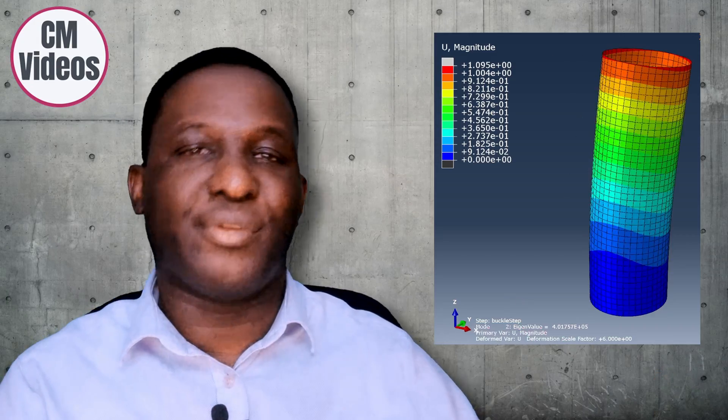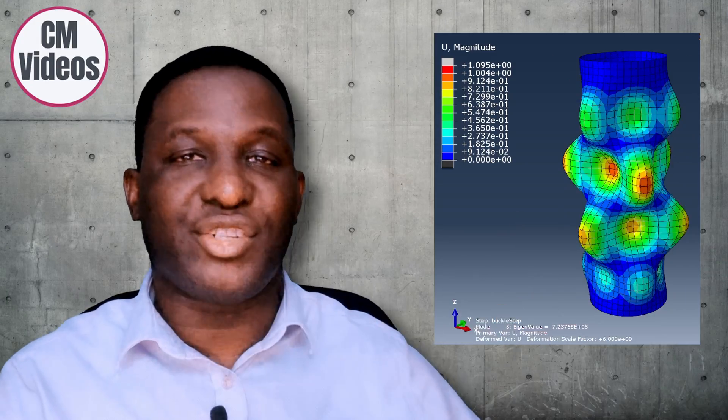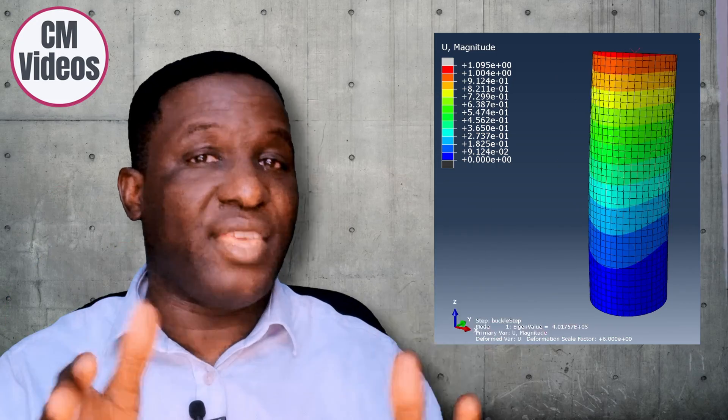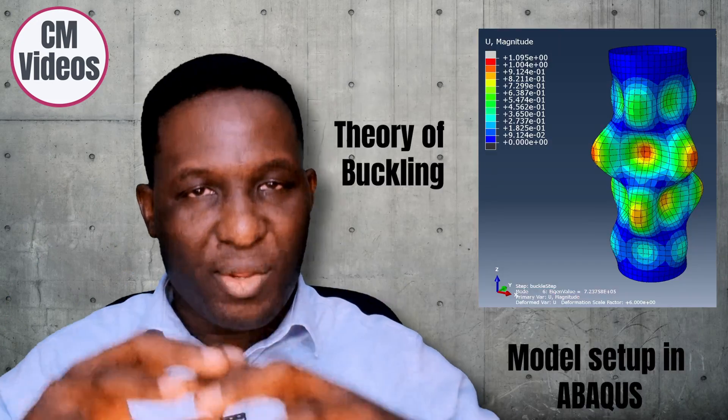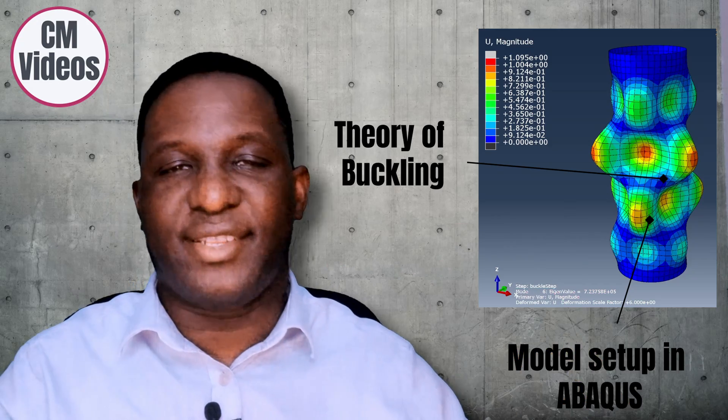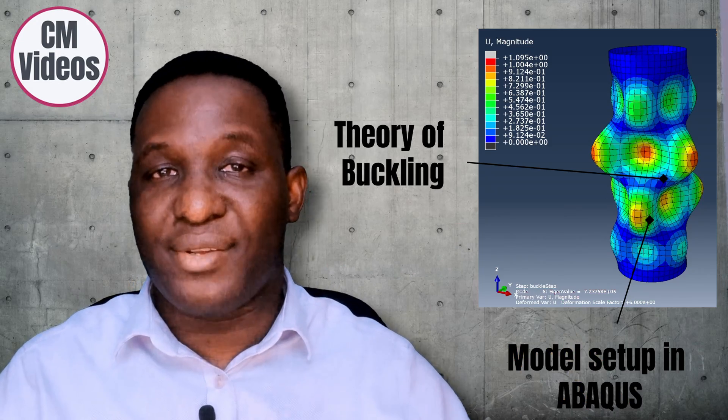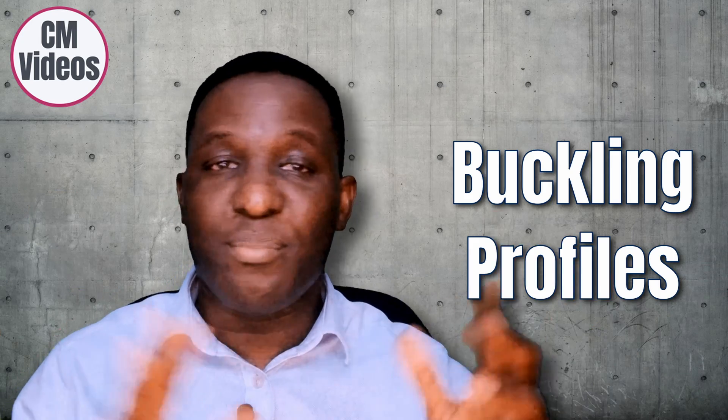This video is about showing you how to undertake the buckling response of a thin-wall cylindrical structure. We'll go through the theory behind it and how you can set this up in Abaqus. At the end, I'll show you how to plot the buckling profiles for different modes of buckling associated with this type of deformation.